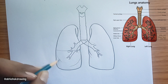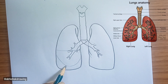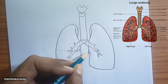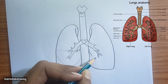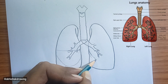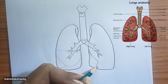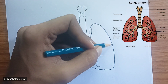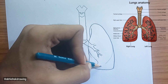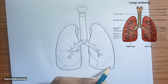Trachea, or windpipe: a cartilaginous tube extending from the larynx that carries air to and from the lungs. Tracheal cartilage: these are the C-shaped rings of cartilage that provide structural support to the trachea, preventing it from collapsing.